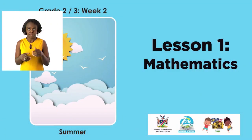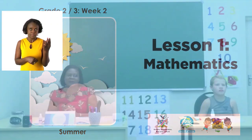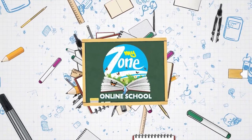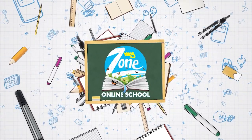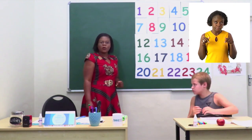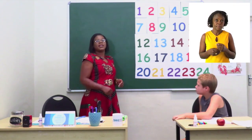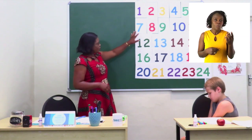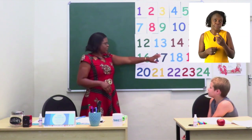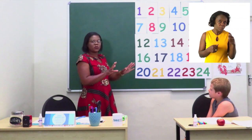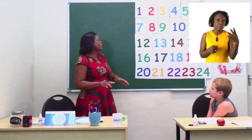Today's lesson we are going to look at mathematics. Today's topic we are going to learn how to count in twos. We are going to count in twos, and we will just end up to 24. Downwards you can continue alone at home.